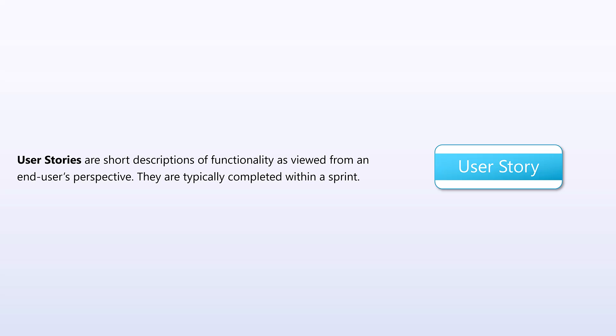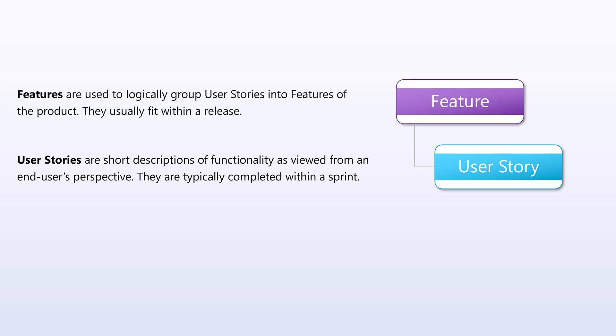A work item type is effectively an epic, a feature, a user story, a task, or a bug, and each one of these serves a specific purpose in your project lifecycle. User stories are short descriptions of functionality as viewed from an end user perspective. They are typically delivered within a sprint. Features are used to logically group user stories into features of a product. They usually fit within a release.